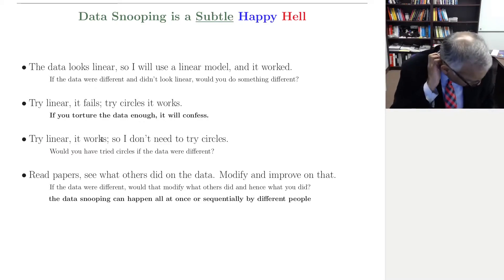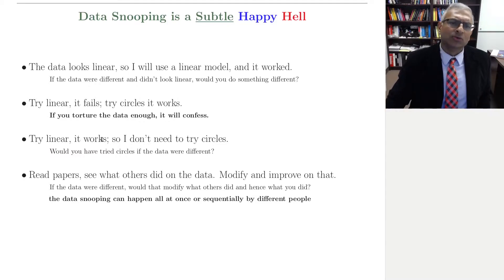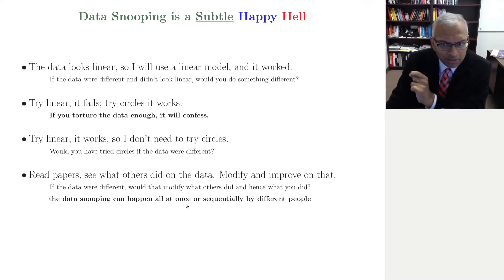Data snooping can happen all at once, where you yourself on Monday decide to try linear, and then if it fails circles, and then if it fails neural networks, and so on. Or someone 10 years ago tried linear, and then 5 years ago tried circles, and then you tried neural networks. The data snooping can happen all at once or sequentially by different people. Still data snooping, you have to pay the price.